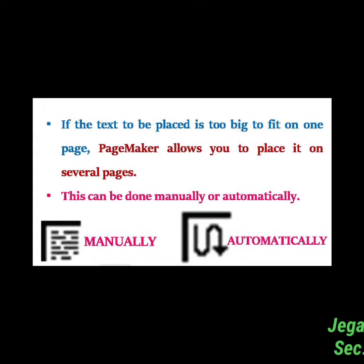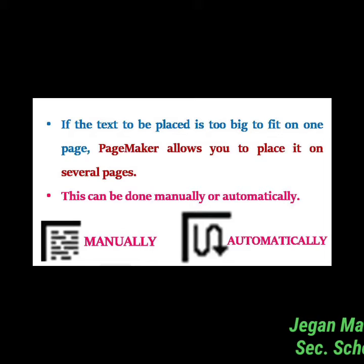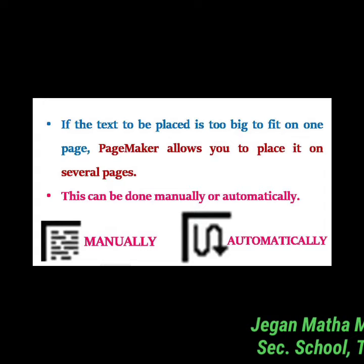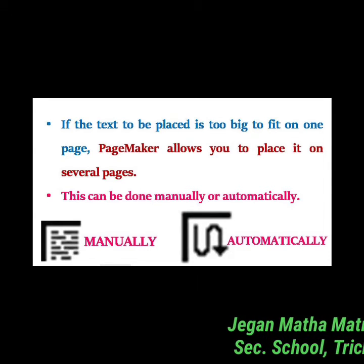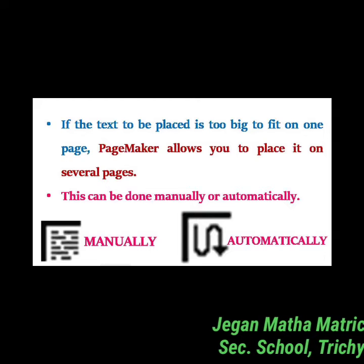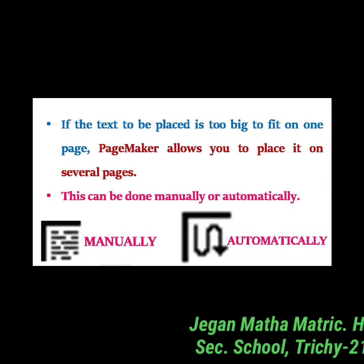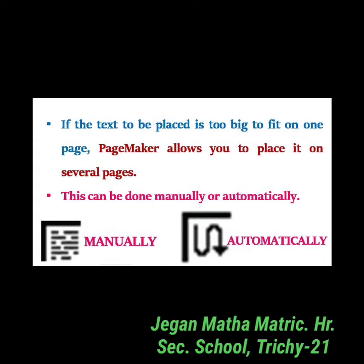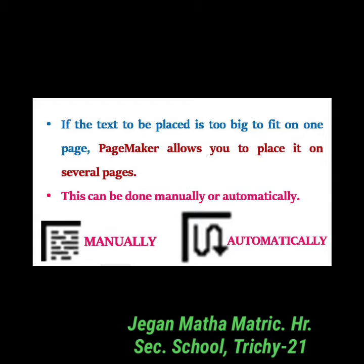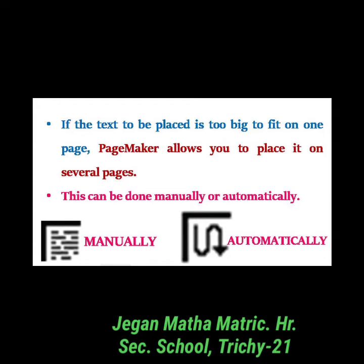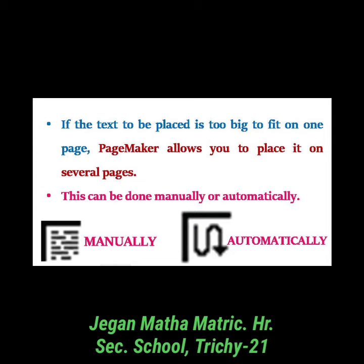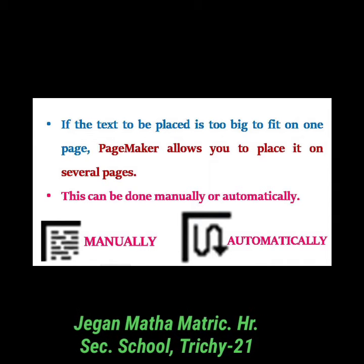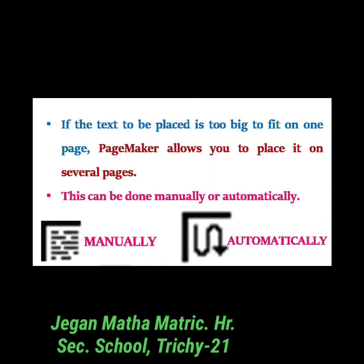For the automatic method: before importing the text, first select Layout > Auto Flow in the menu bar, then import the text. The loaded text icon now looks different — it contains a squiggly arrow. Place the loaded text icon at the bottom of the page and click. The text will automatically flow onto succeeding pages, creating new pages if necessary.